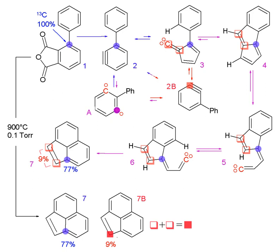Traces are also used extensively in oceanography to study a wide array of processes. The isotopes used are typically naturally occurring with well-established sources and rates of formation and decay. However, anthropogenic isotopes may also be used with great success. Researchers measure the isotopic ratios at different locations and times to infer information about the physical processes of the ocean.